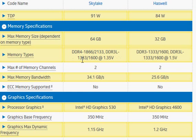DDR4 works at a lower voltage — 1.2 volts — while DDR3 works at 1.5 volts, so you get some power saving because of that. As of now, we don't see any performance improvement moving from DDR3 to DDR4, so it's all about the power savings at this point.